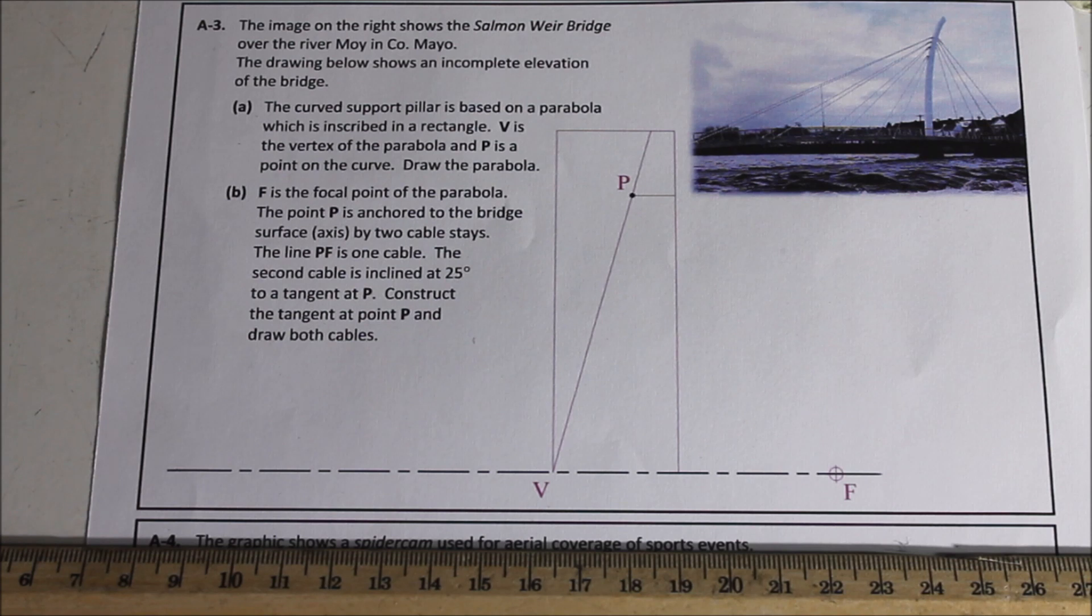And then part B, F is the focal point of the parabola and point P is anchored to the bridge surface, i.e. the axis, by two cable stays. The line PF is one cable. The second cable is inclined at 25 degrees to a tangent at P. Construct the tangent at P and draw both cables.